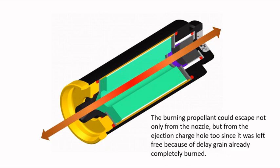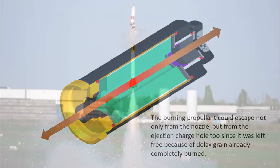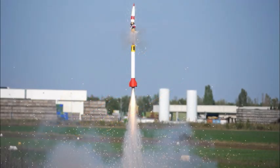The burning propellant could escape not only from the nozzle but from the ejection charge hole too, since it was left free because the delay grain had already completely burned.